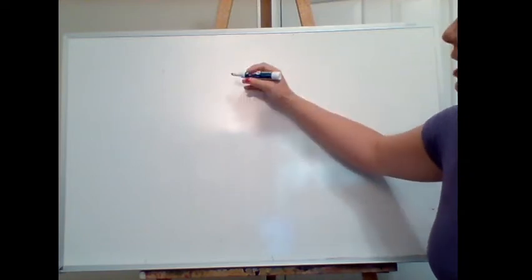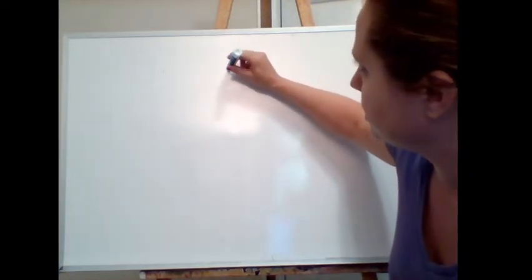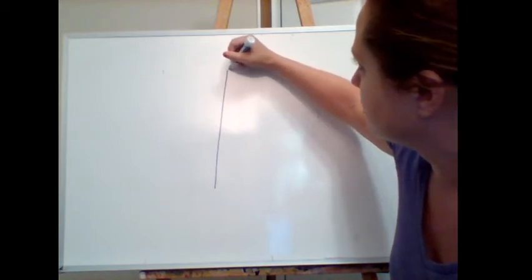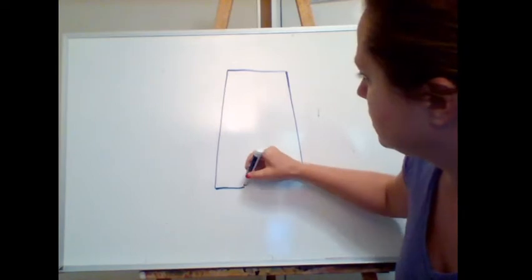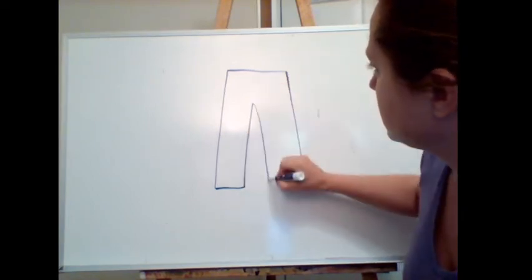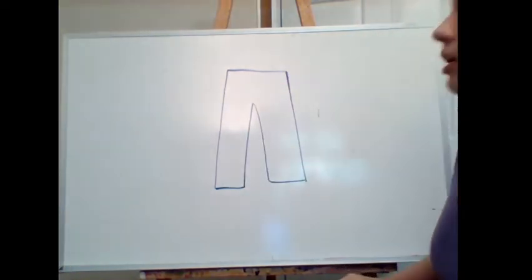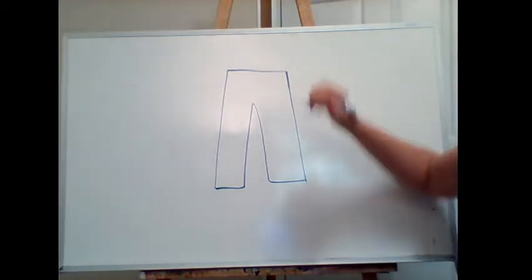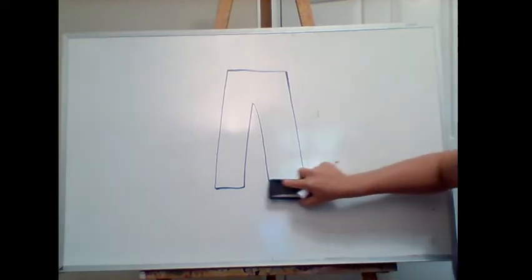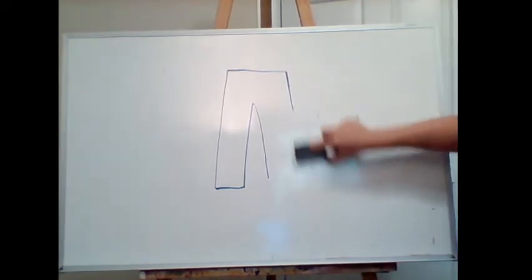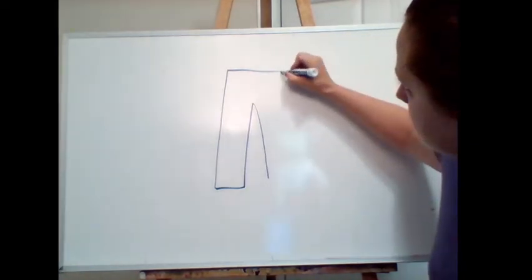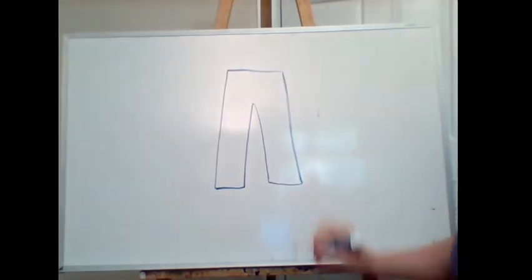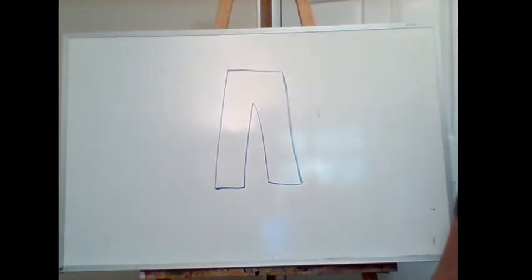Jean construction, by the way, has not changed much in over a hundred years. So let's get a basic shape in there. One leg's a little bit longer and wider than the other — let's just fix that. Here's our basic pant shape, and the first thing I want to add in is the center front seam.